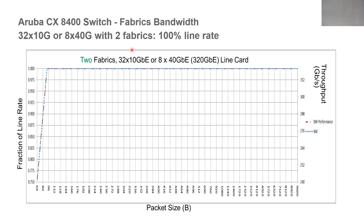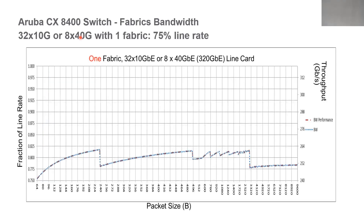Switching over to the 10-gig or the 40-gig line card — we have a 32-port 10-gig line card as well as an eight-port 40-gig line card — these can run at 100% line rate when running with two fabrics. So with three fabrics installed, one could fail and performance would stay the same. If we failed all the way down to one fabric using these 10-gig or 40-gig line cards, then performance would decrease to 75%.